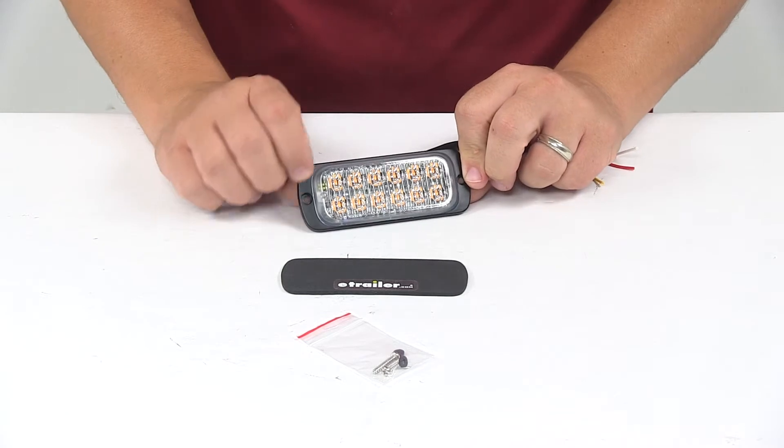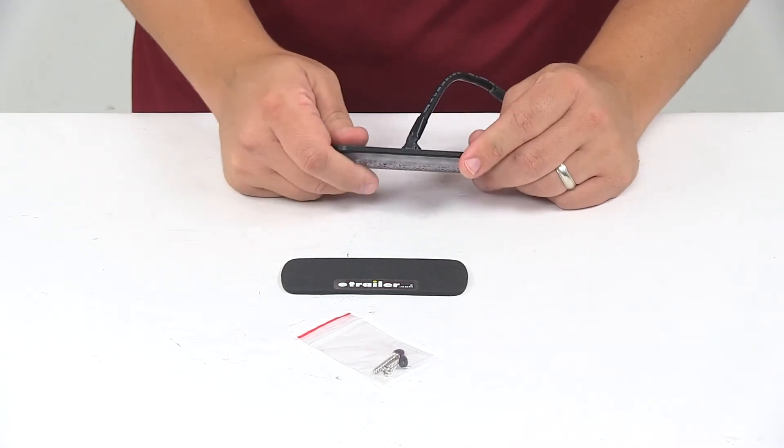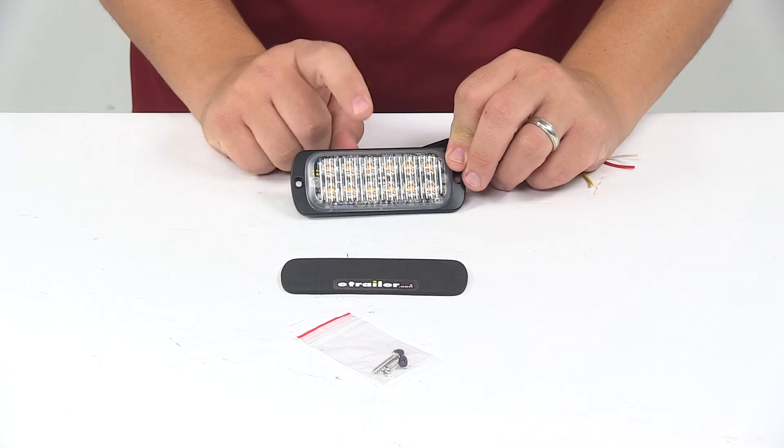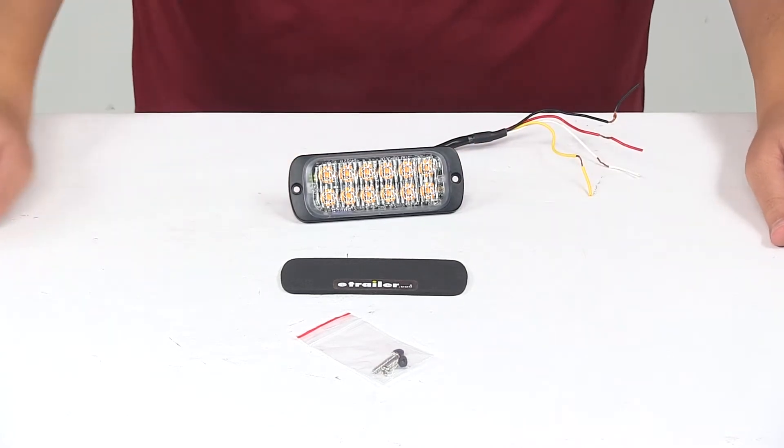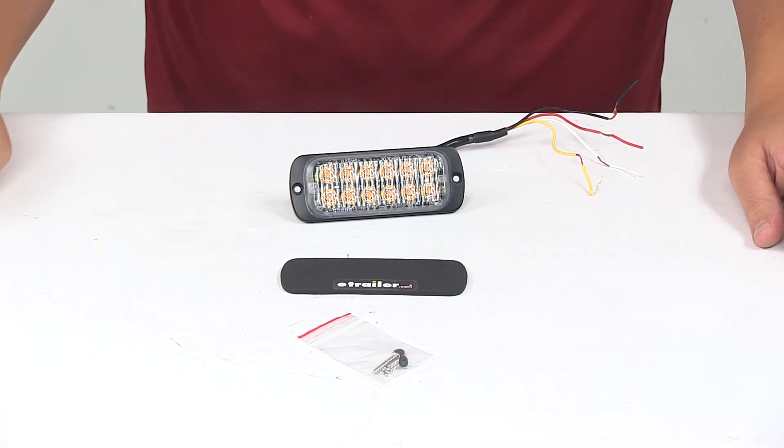It has a really nice black housing. It's an aluminum housing. Nice clear lens with amber LEDs. It's a surface mount installation. Mounting hardware and gasket are included.